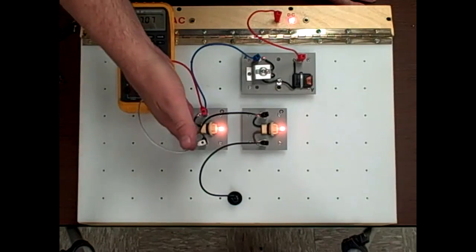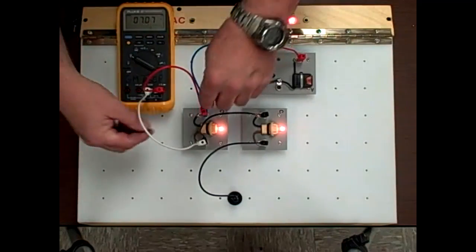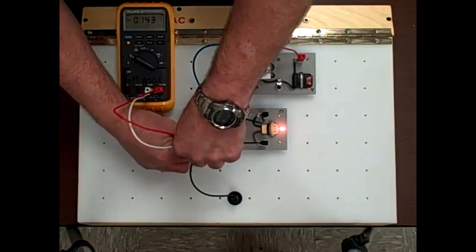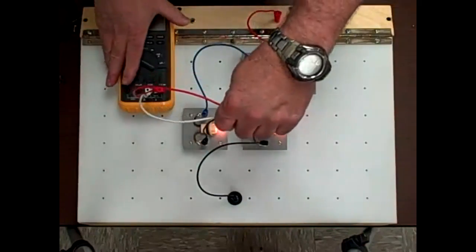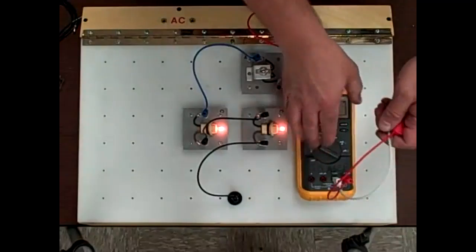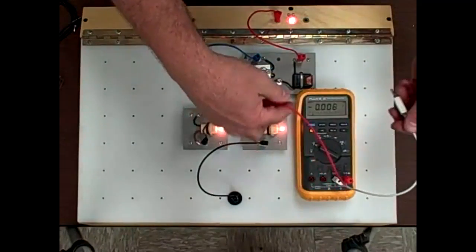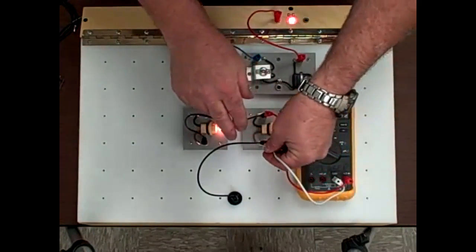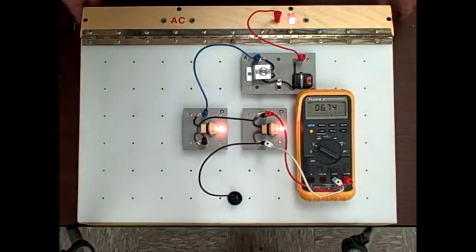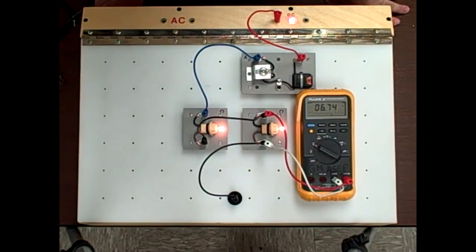Now we're also dropping voltage on this bulb so let's move over there. Just move the meter over here and we'll go upstream and downstream and we find 6.75, roughly 6 and 3 quarters.